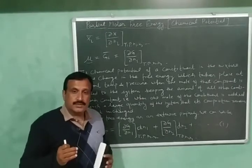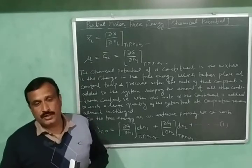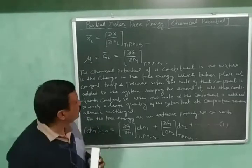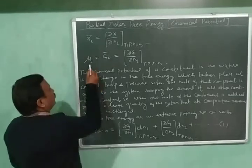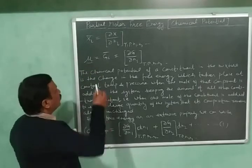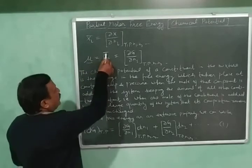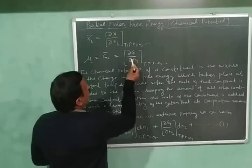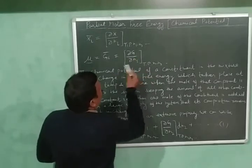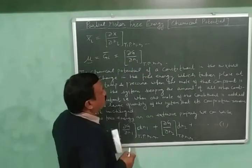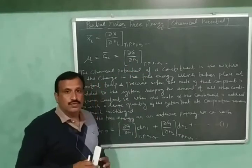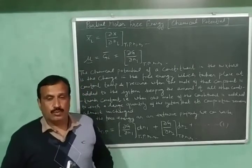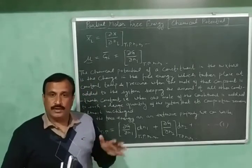Here we are going to discuss Partial Molar Free Energy or Chemical Potential. It is represented by the symbol μ or Ḡᵢ, and it is equal to (∂G/∂Nᵢ) at constant temperature, pressure, and number of moles of all other components except the ith component.